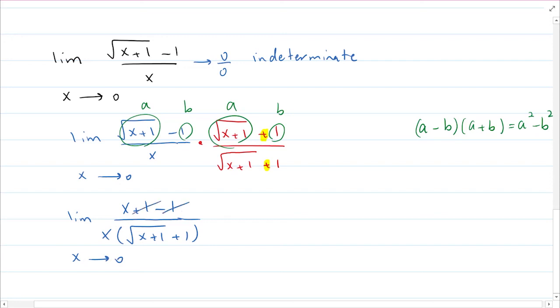So you see here that these two cancel out, and this gives me limit of x over x square root of x plus 1 plus 1 as x approaches 0. Obviously, if you substitute 0 here, again, you're going to get 0 over 0. But you can see that I can cancel out these two x values. And now if I substitute, I get 1 on top, and then I get 1 plus 1, which is 1 half. So that would be the answer to the limit.